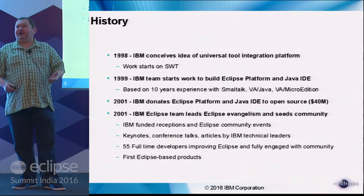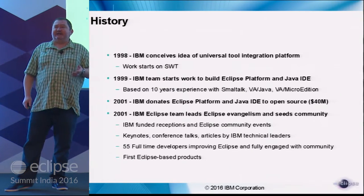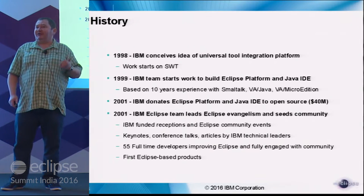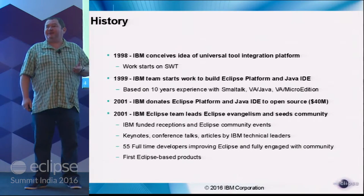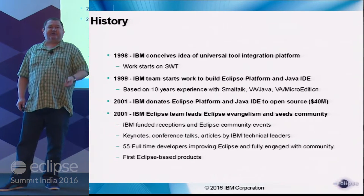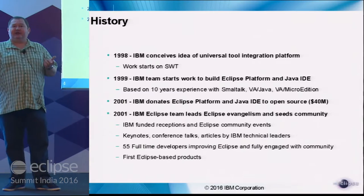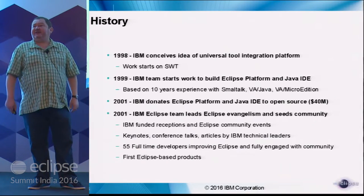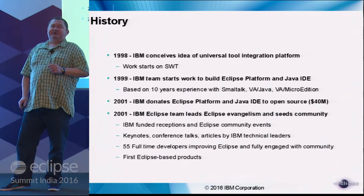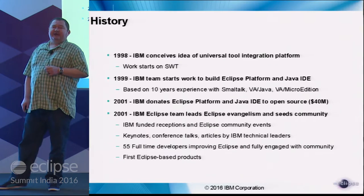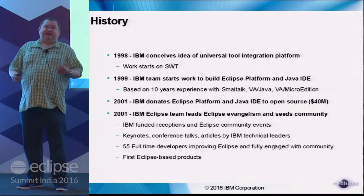Inside IBM the discussion started: do we want to make this open source? There were many objections. The lawyers said it would never work. The product and sales team said we can't give something away for free. This debate took more than a year. Then in 2000 the .NET 1.0 beta came out, and that was the trigger to convince management. In November 2001, shortly after talks in Uppsala, Eclipse was open sourced — about a $40 million investment from IBM given away.